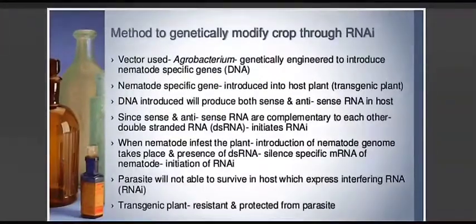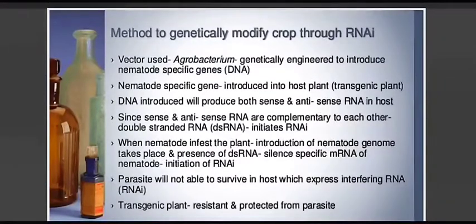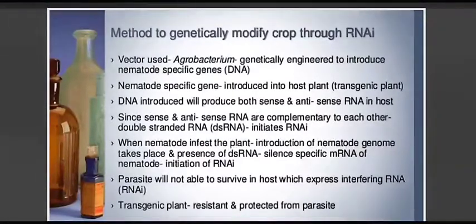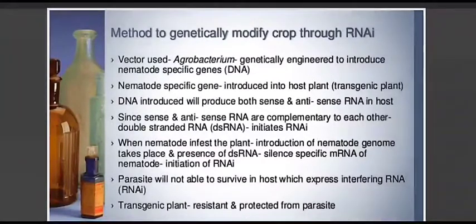The vector used in this process is Agrobacterium, a bacterium that is genetically engineered to introduce the nematode-specific genes into the tobacco plant. The nematode-specific genes are introduced into the host plant, making it a transgenic plant. The introduced DNA will produce both sense and antisense RNA in the host. Since sense and antisense RNA are complementary to each other, a double-stranded RNA — dsRNA — is produced, which initiates RNA interference.